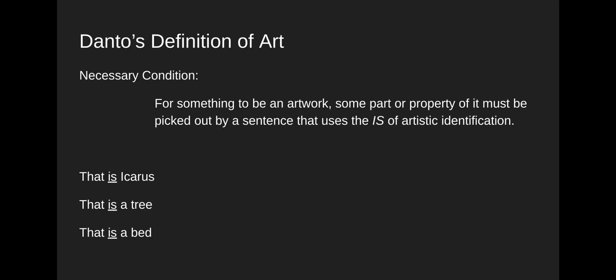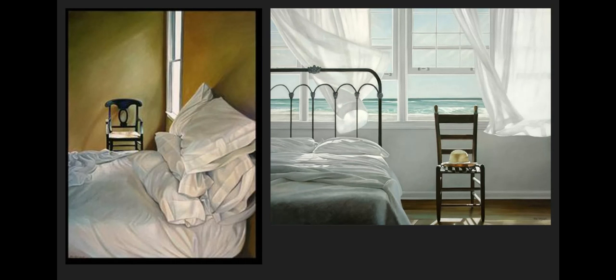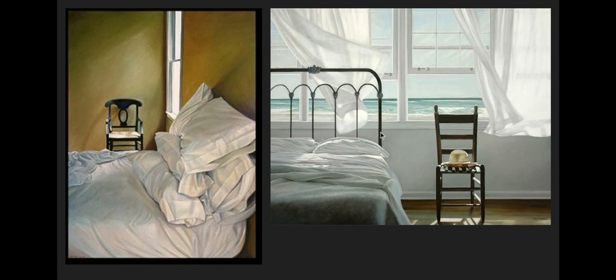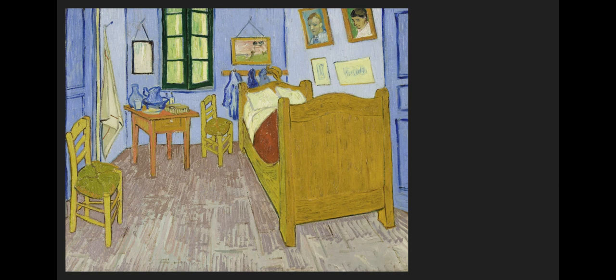For something to be an artwork, some part of it must be picked out by this 'is of artistic identification.' And if this is a necessary condition on what it takes to be a work of art, now we have a way of solving that problem we started out with — how can you separate beds that are artworks from beds that are not artworks? You can see here with these paintings of beds: some part of these is characterized by the 'is of artistic identification.' This stretch of paint over here is a pillow; this bit of black paint over here is part of the headboard. We can do the same thing with Van Gogh's painting of a bed — these yellow bits of paint are part of the footboard. I'm using the 'are of artistic identification' there.